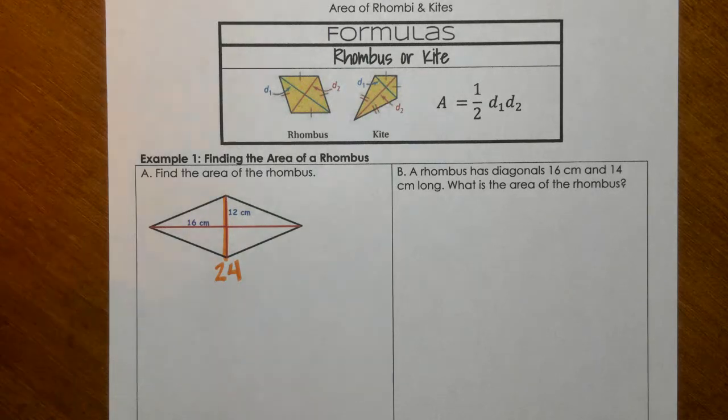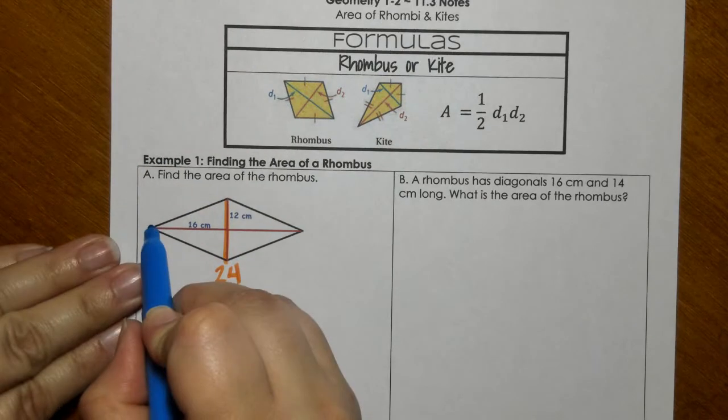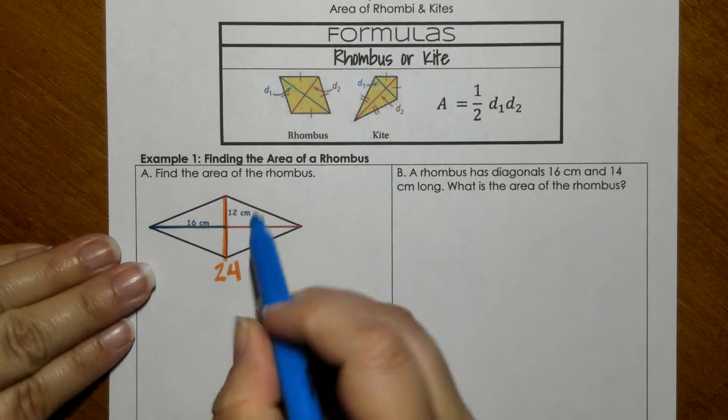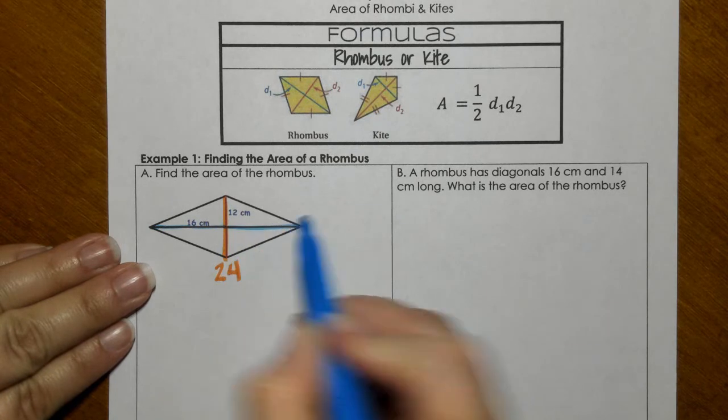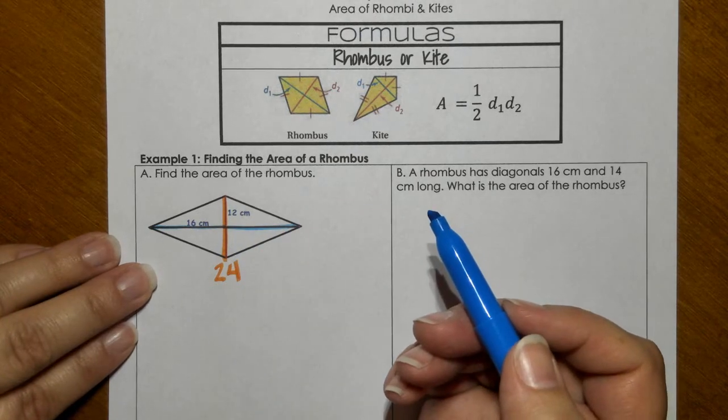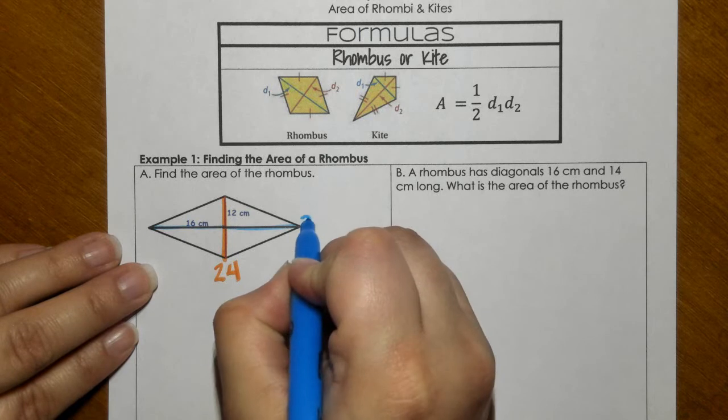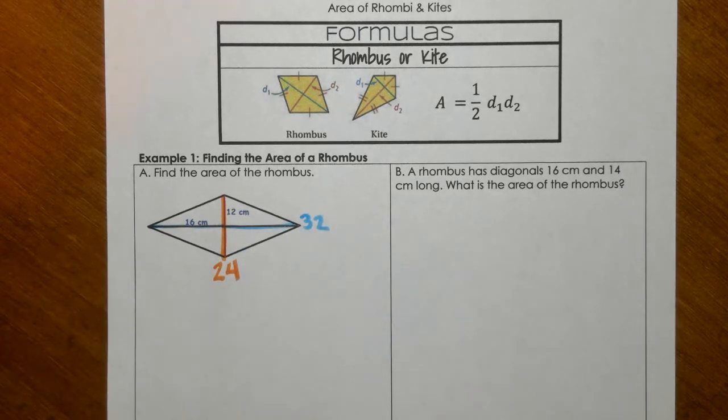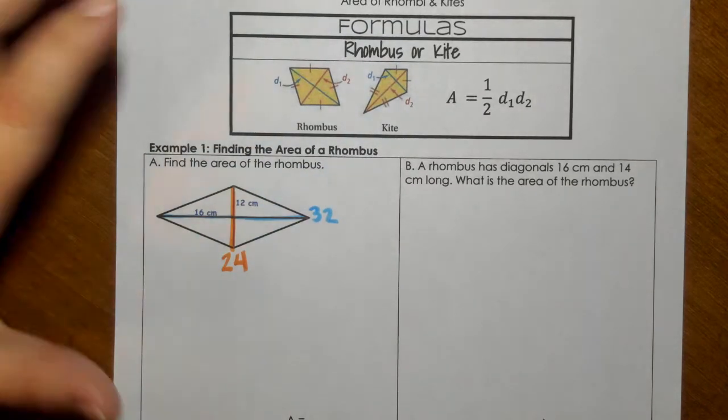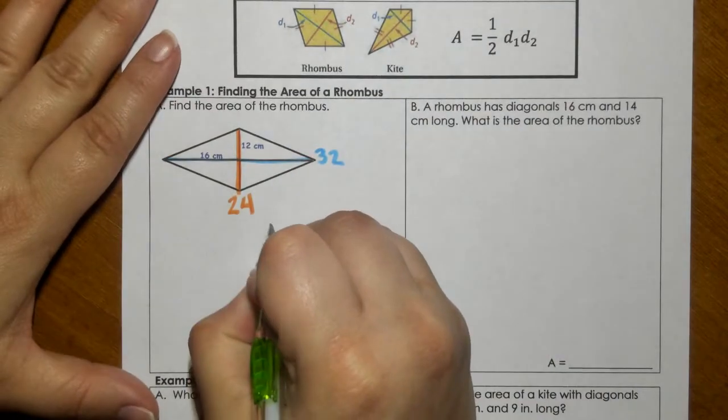Again, if this part is 16, then this is also 16, which makes it a 32. So there's your diagonal 1 and your diagonal 2, and you're just plugging it into the formula.